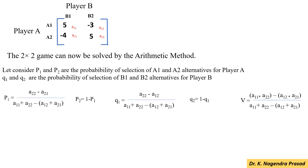Here, let us consider A11 = 5, A12 = minus 3, A21 = minus 4, and A22 = 5. Then, I have to substitute these values in the above equations. The formula for P1 is (A22 minus A21) divided by (A11 plus A22 minus A12 plus A21).